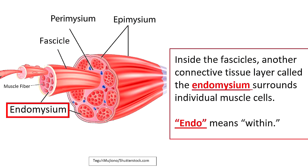Inside these fascicles you will find another connective tissue layer called the endomysium, and this surrounds the individual muscle cells inside those fascicles. Endo simply means within, so that will help you remember that it surrounds the individual muscle fibers within the fascicle.